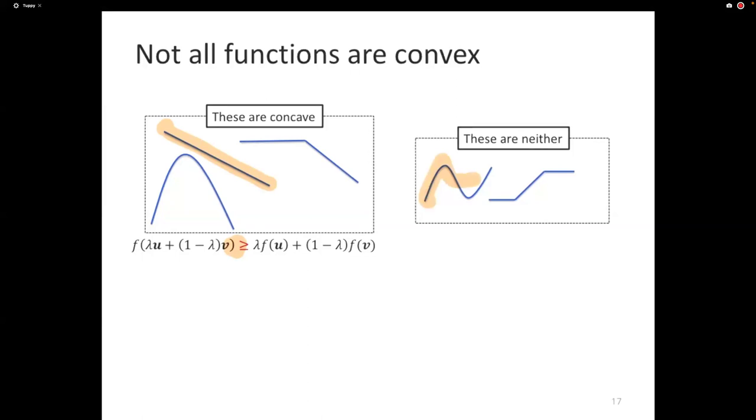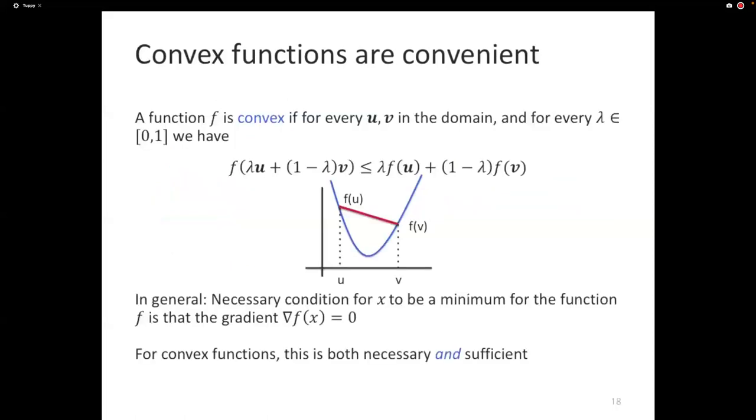Now, the reason convex functions are interesting and are studied a lot, some might say excessively, in the optimization literature is, you know, from calculus, you know that when you want to find the minimum of a function, you take its derivative and you set the gradient to zero and you find the value of the function, you find the input where the derivative is zero. So that's a necessary condition for the minimum of the function, for some point x to be the minimum of the function. For convex functions, this is both necessary and sufficient. If you can find an x where this holds, then you are guaranteed to have found the minimum of the function, which is why convex functions are convenient. Because if you want to optimize it, you keep trying to find an x such that the gradient is equal to 0, and you are guaranteed that you have a minimum.